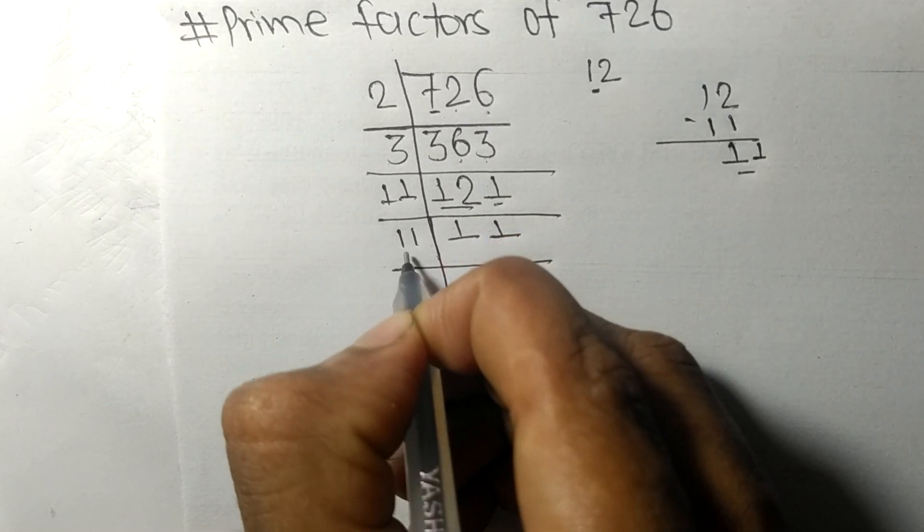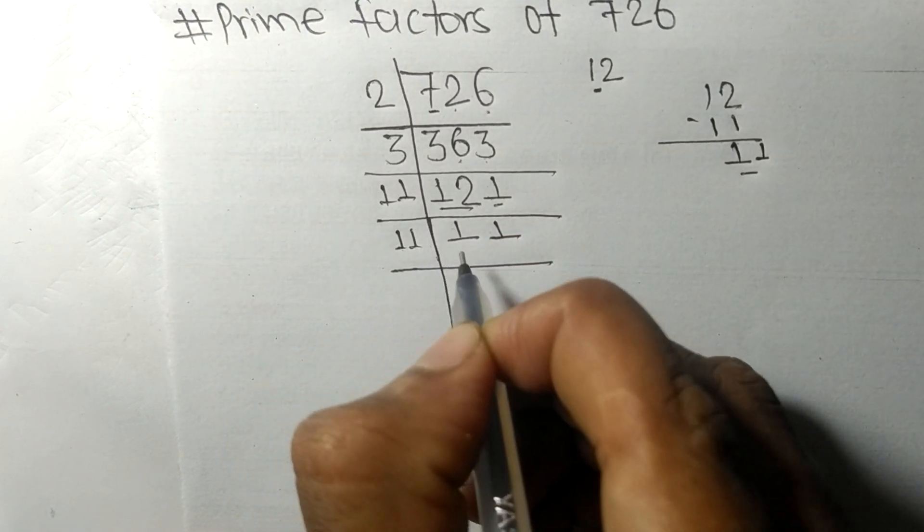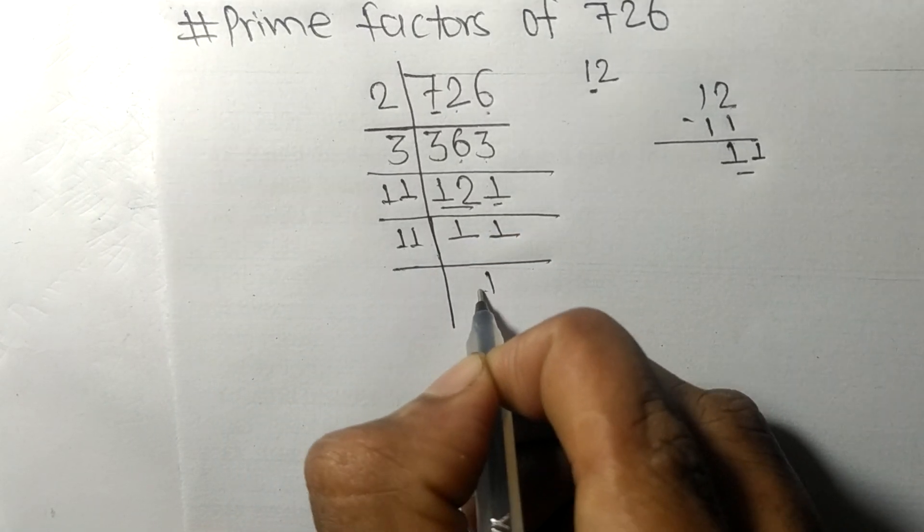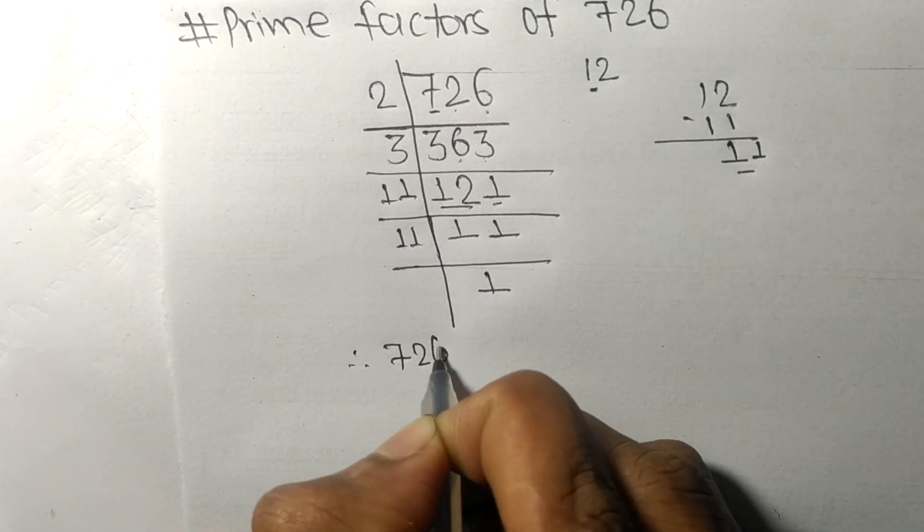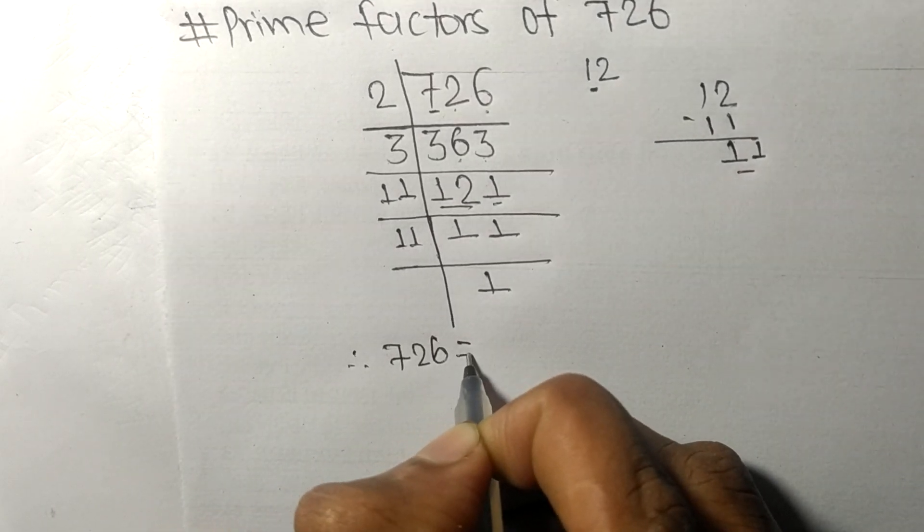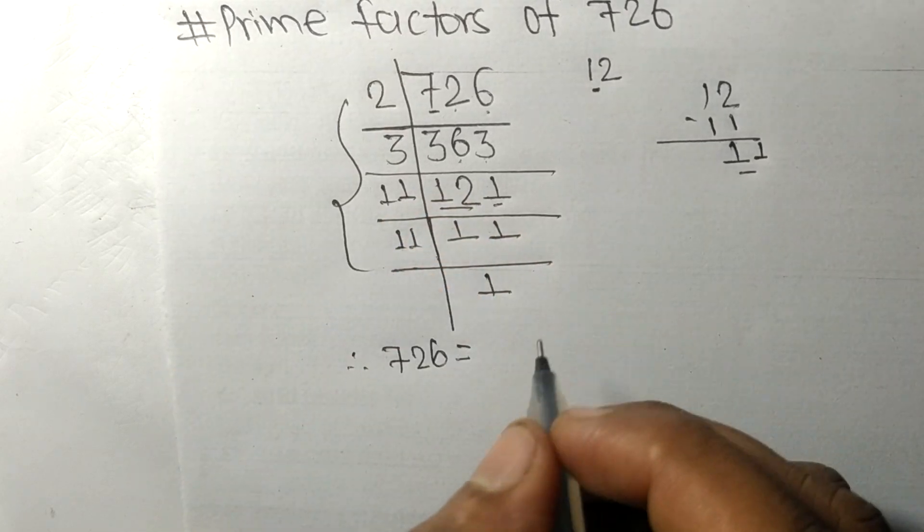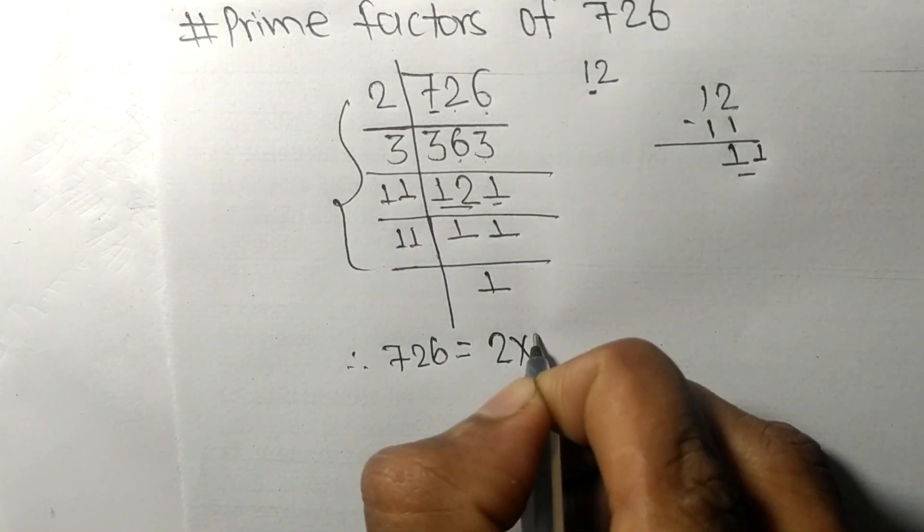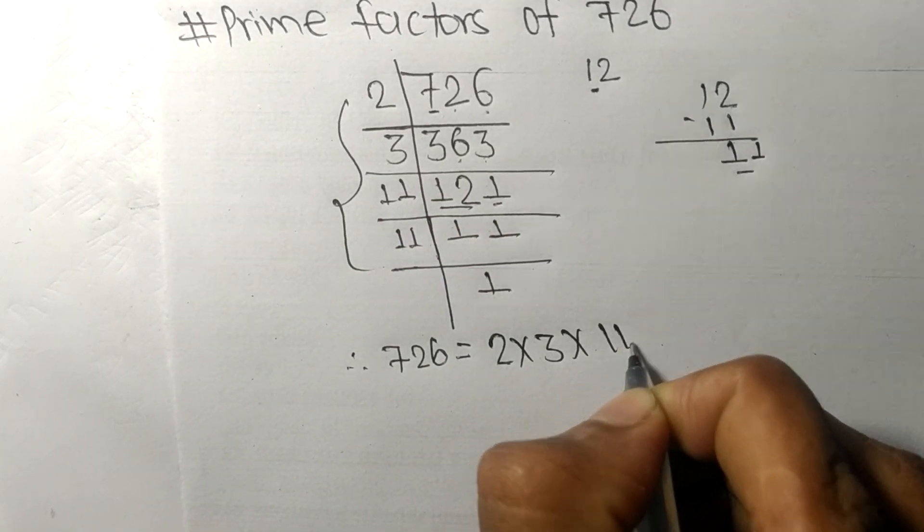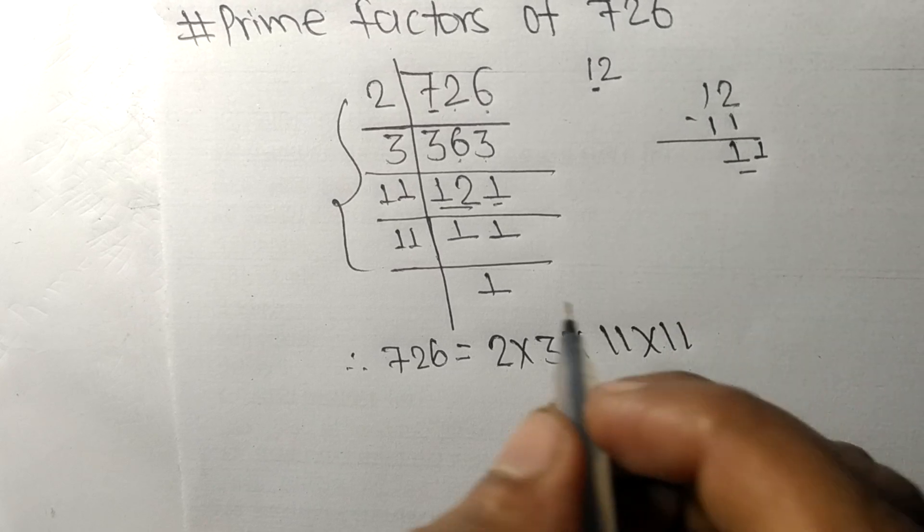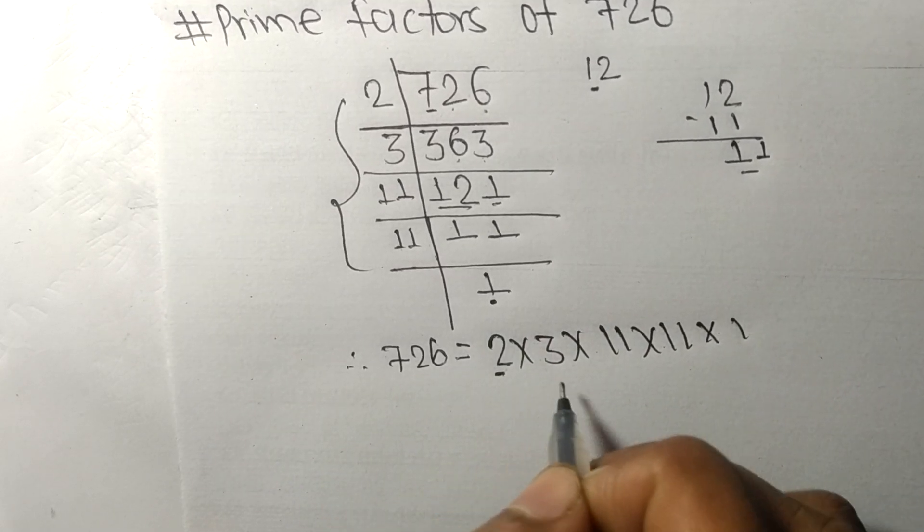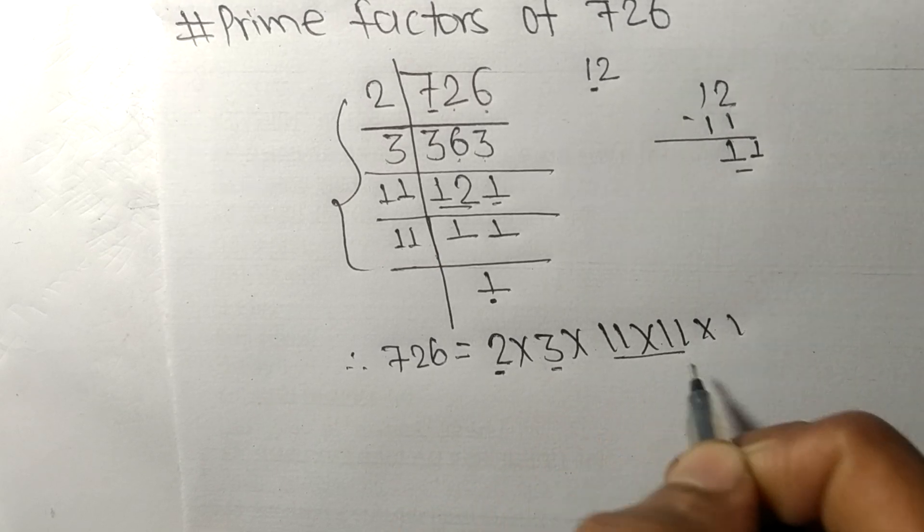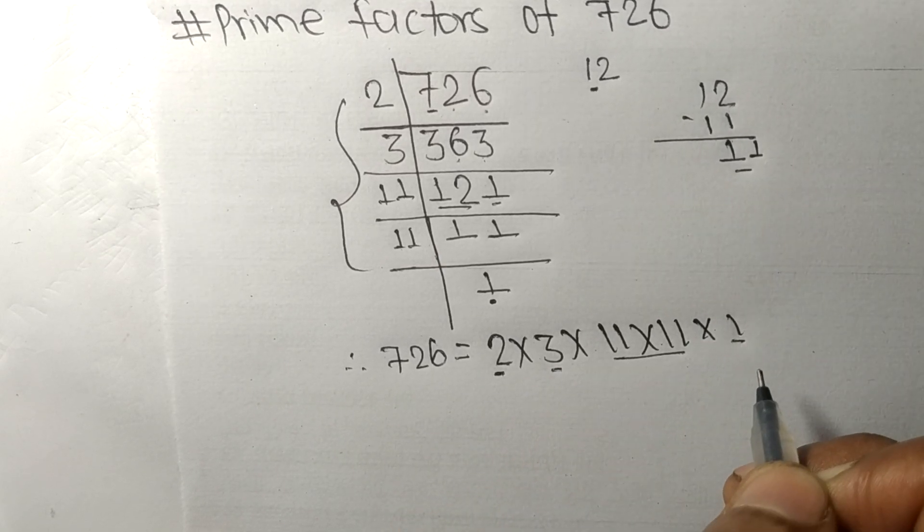Therefore, 726 is equal to 2 times 3 times 11 times 11. These 2, 3, 11, and 11 are the prime factors of 726.